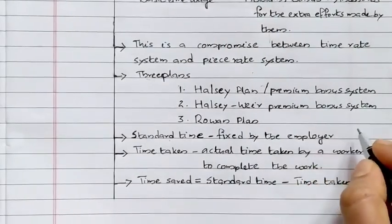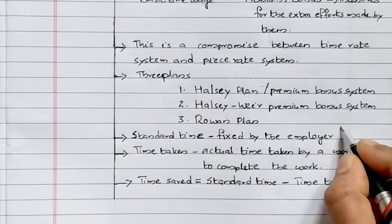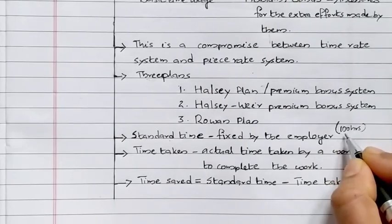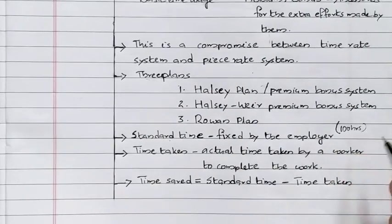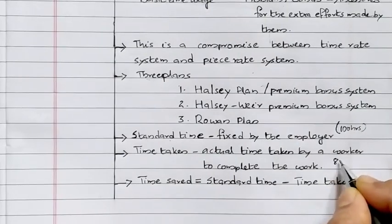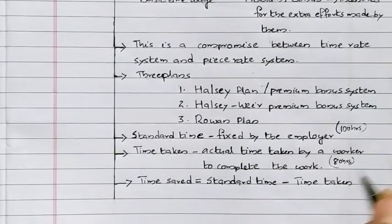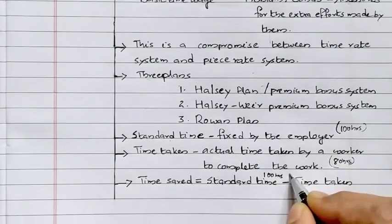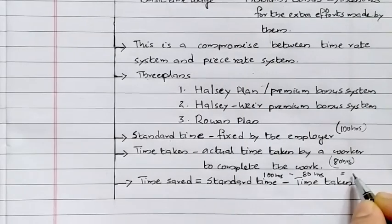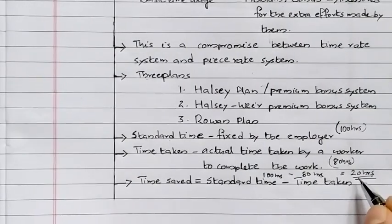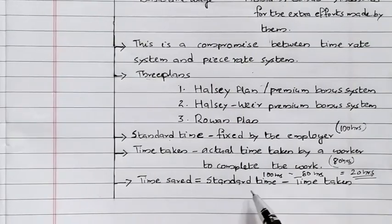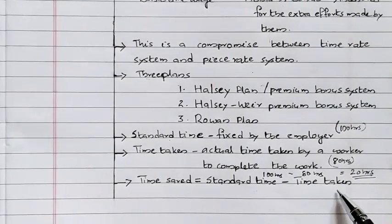For example, if the factory standard time is 100 hours and the worker completes it in 80 hours, then Time Saved equals 100 hours minus 80 hours, which equals 20 hours. So time saved is the standard time minus actual time taken.